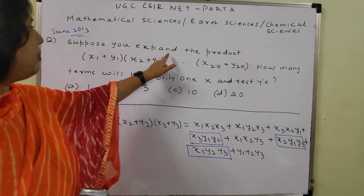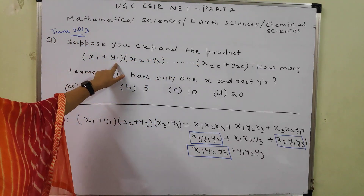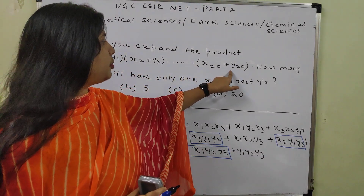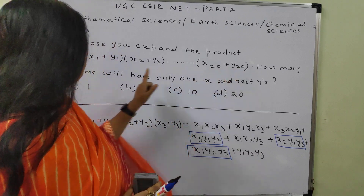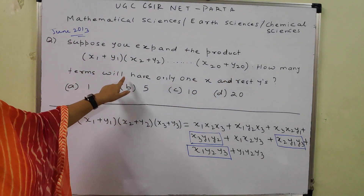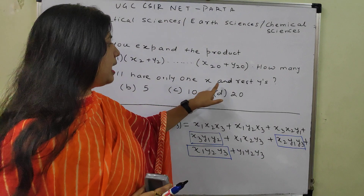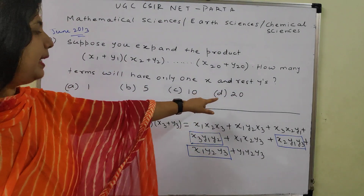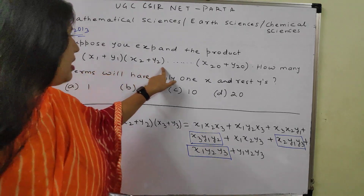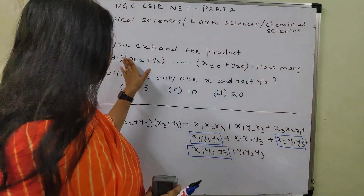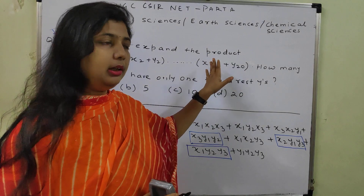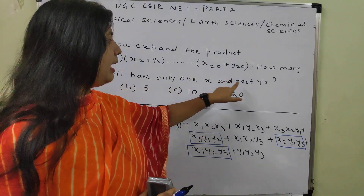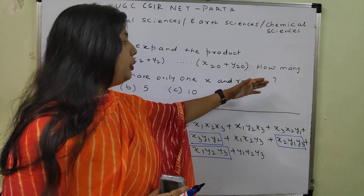Suppose you expand the product (x1 + y1)(x2 + y2)...(x20 + y20). How many terms will have only one x and the rest y's? Four options are given: 1, 5, 10, and 20. After expansion of this product, how many terms will have only one x and the rest y?